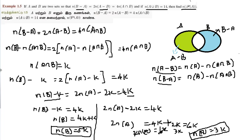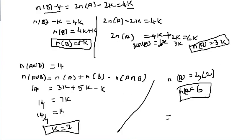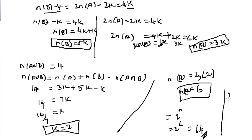Now, n(P(A)) uses the formula 2 power n(A). Substituting n(A) equals 6: 2 power 6 equals 2 times 2 times 2 times 2 times 2 times 2 equals 64. So the answer is 64.